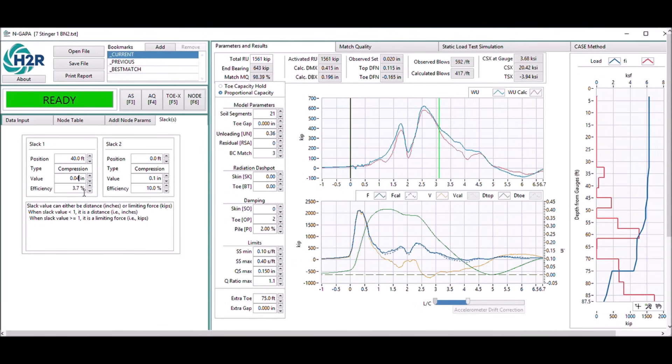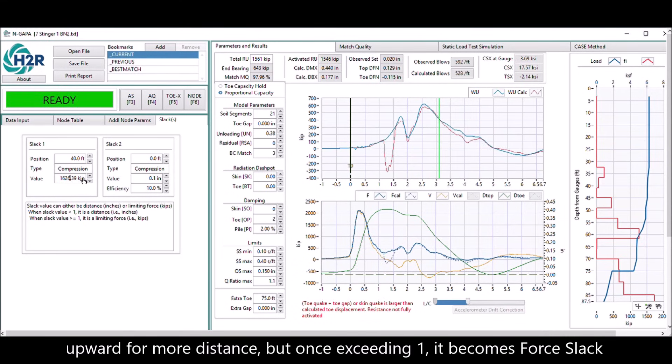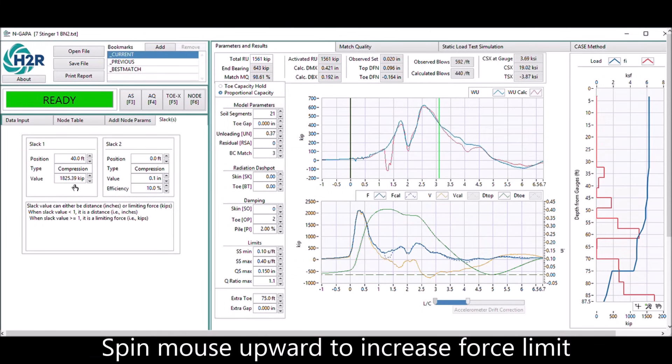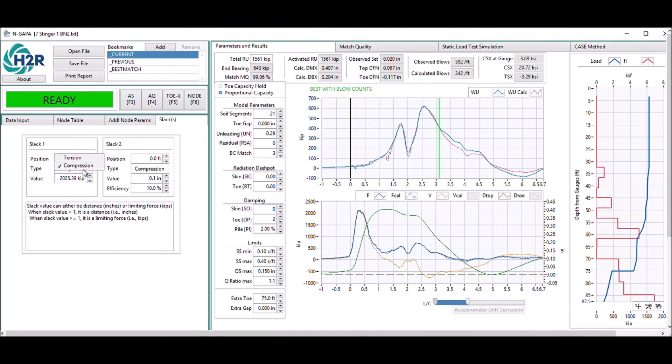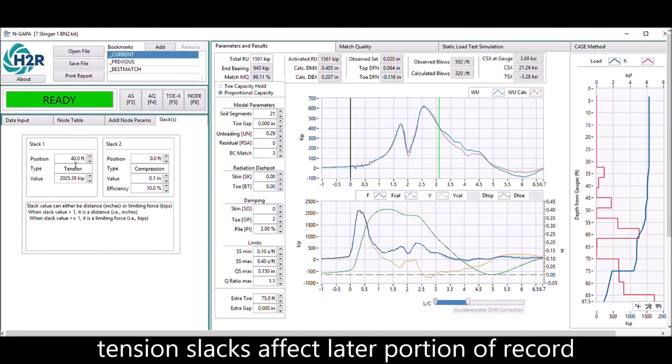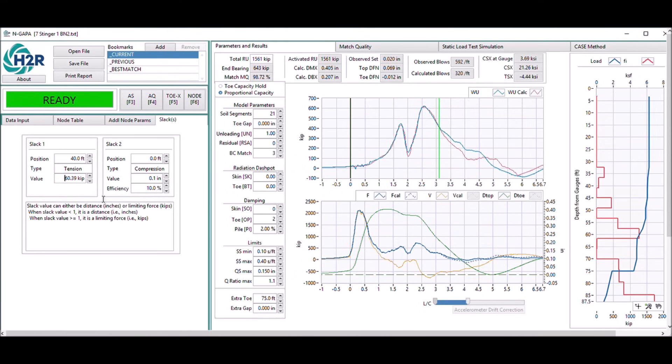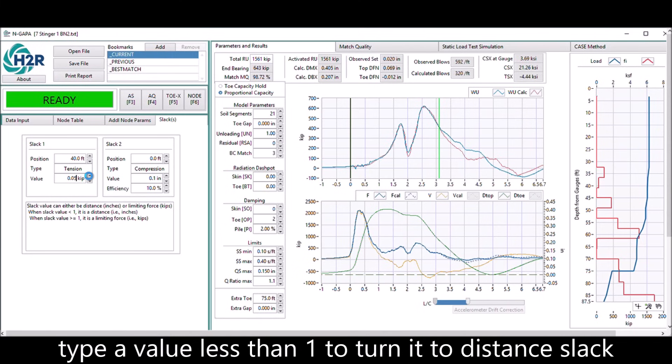On the distance, if you change the distance to higher than one, it will automatically become a force slag. Compression force slag will need a very high limit. The higher the limit, the less the reflection. Tension slag has much lower force limit, and it affects the later part of the signal. If the value is less than one, it is back to distance slag.